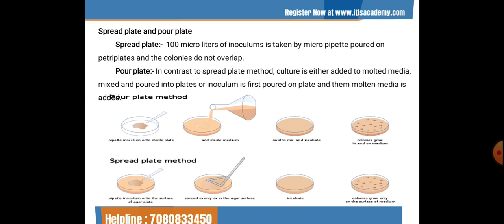In the spread plate method, 100 microliters of inoculum is taken by micropipette and poured on the petri plate; colonies do not overlap. In the pour plate method, the culture is either added to molten media, mixed, and poured into the plate, or the inoculum is first poured on the plate and then the molten media is added — either procedure may be used.